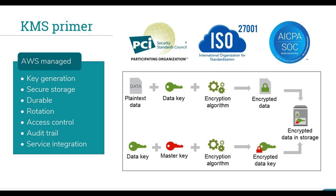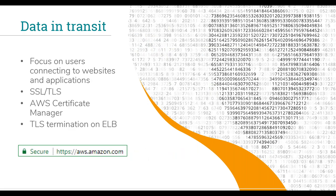Unless you have really strict compliance requirements — in finance for example there are requirements for generating your own key material, key signing ceremonies, and so on — KMS is probably your starting point. Looking at data in transit: we're focusing here on connecting to websites or applications rather than VPN services. We have VPNs that you can establish with IPsec for connecting back to offices or data centers. We're really looking at SSL or TLS — SSL is commonly referred to but it's actually deprecated, so we should be talking about TLS, Transport Layer Security.